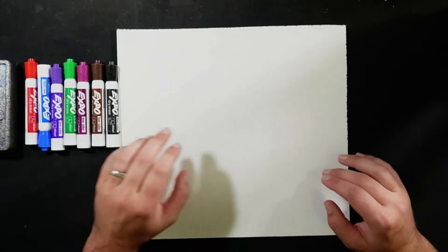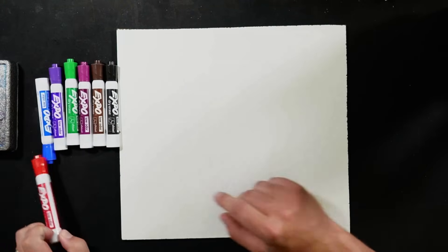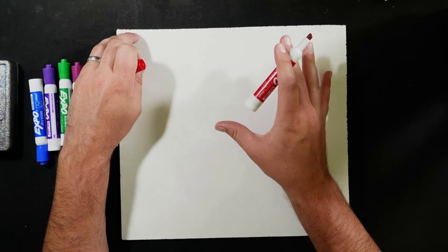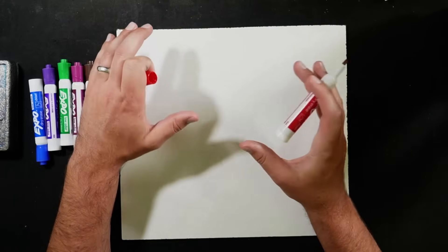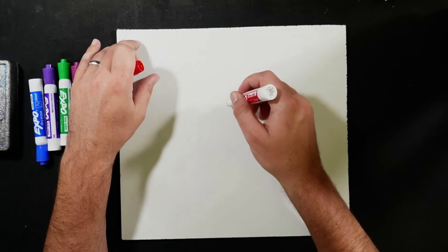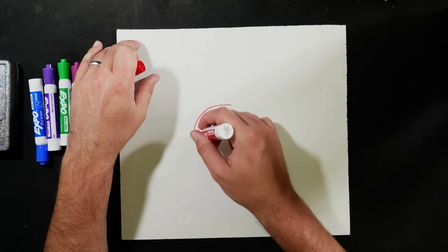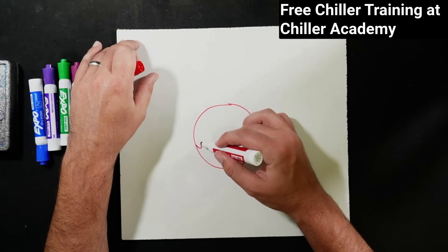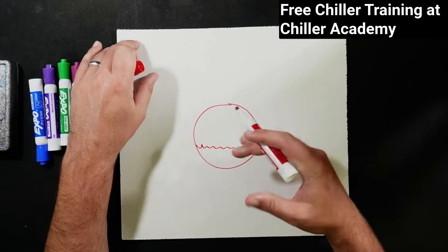So let's come over here to our handy-dandy whiteboard. In this case, despite the type of compressor, the core fundamentals are going to be pretty well the same. Somewhere on the compressor casing, there's going to be a sight glass, and we're going to be able to see some level of oil collected there.